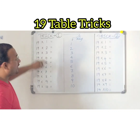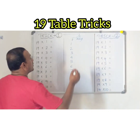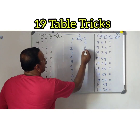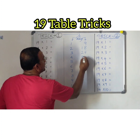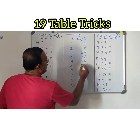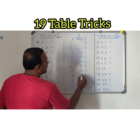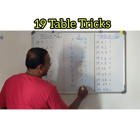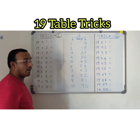Next I will take the 9 table. 9 ones are 9, 18, 27, 36, 45, 54, 63, 72, 81, and finally 9 tens are 90.